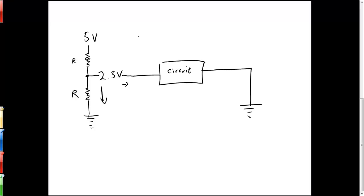Now even worse, if the current draw from our particular circuit changes over time, we have no way of ensuring that we can adjust the resistances here to maintain a nice constant 2.5 voltage supply.